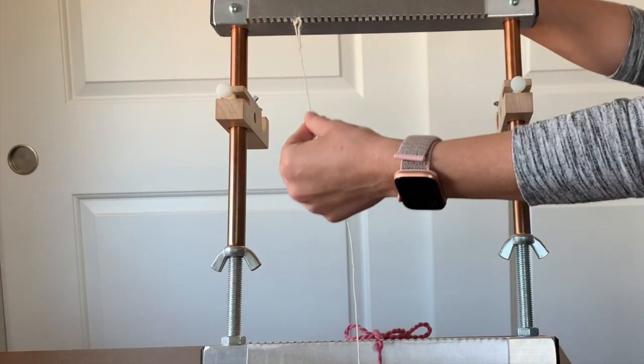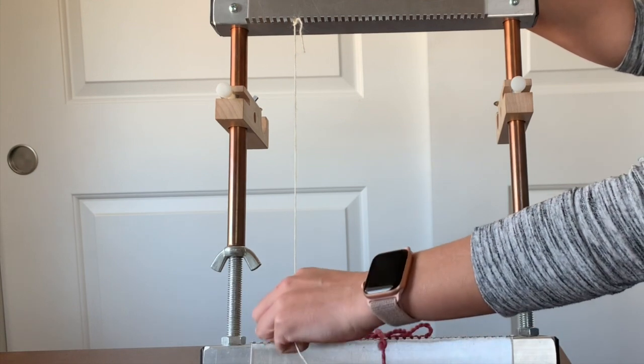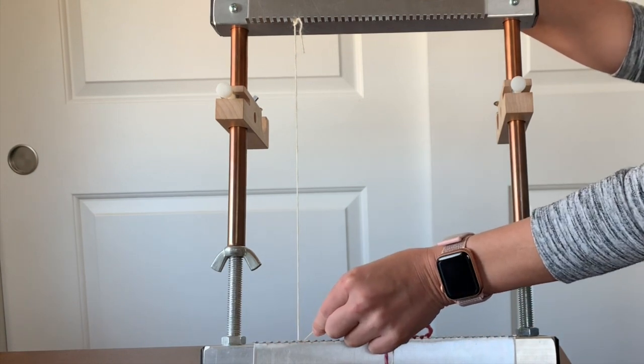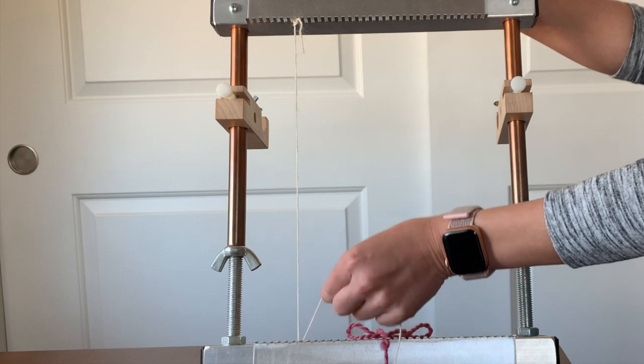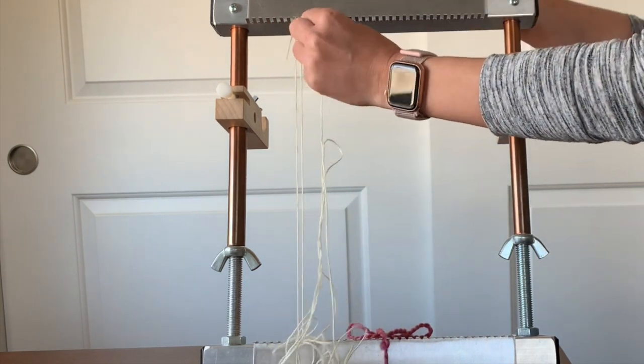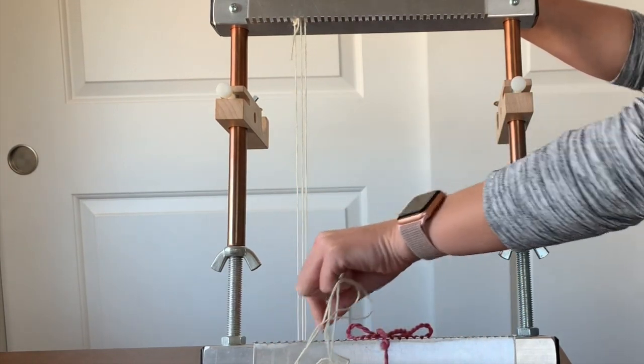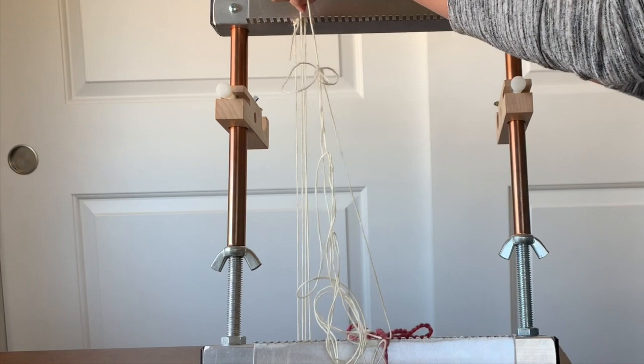This is very easy, so you're just going to zigzag on your loom. You bring it down to a tine at the bottom and loop around that, and then come back up to the top, loop around that tine, go to the bottom, loop, top, loop.